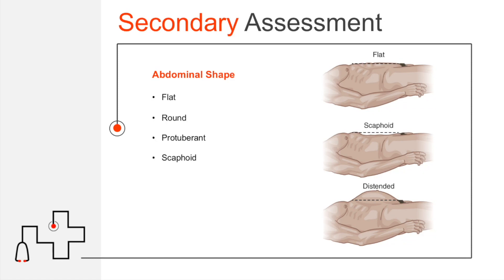Note the shape of the abdomen — is it flat, round, protuberant, or scaphoid (concave)? These findings don't necessarily point to a specific pathology on their own, but coupled with other assessment findings they become more meaningful. For example, a distended abdomen with a history of liver failure could suggest ascites, while a distended abdomen in a young childbearing female could be pregnancy. Use abdominal shape as one piece of the full picture.